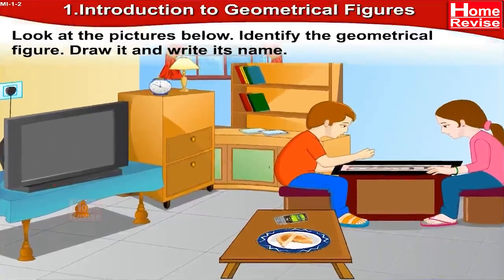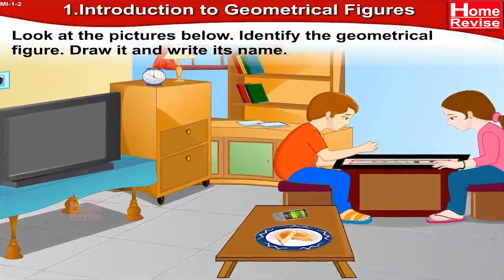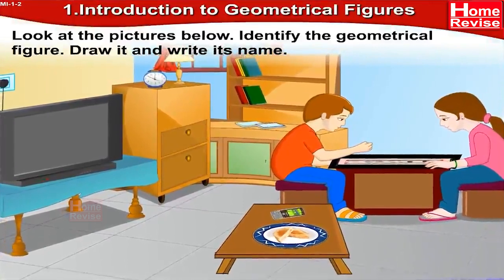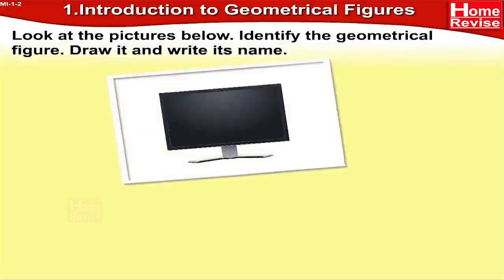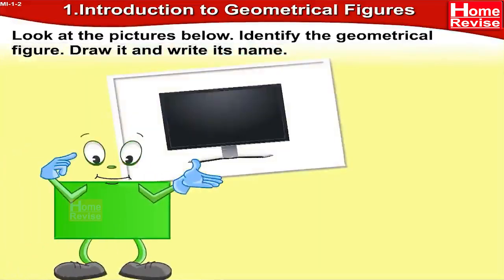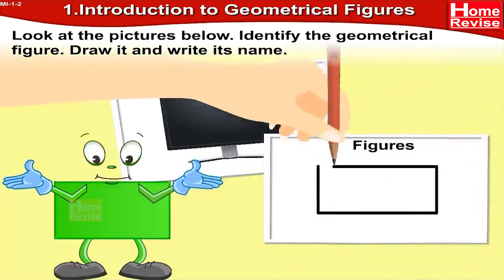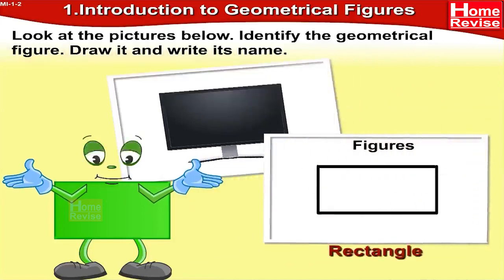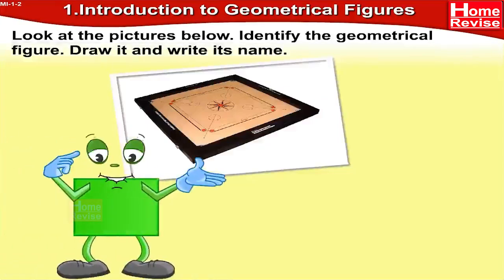Look at the pictures below, identify the geometrical figure, draw it, and write its name. This is a picture of a TV. If you notice, the figure of the TV is like a rectangle. Let us draw a rectangle over here, so the name of the figure is rectangle.